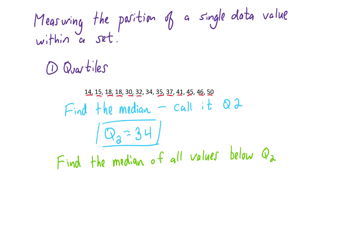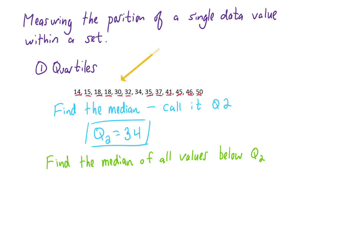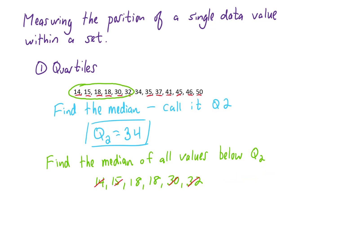The next step in finding quartiles is to find the median of all data values below Q2. Finding the median of those data values, we find two middle values: 18 and 18, and their average is 18. That value is our first quartile, or Q1.